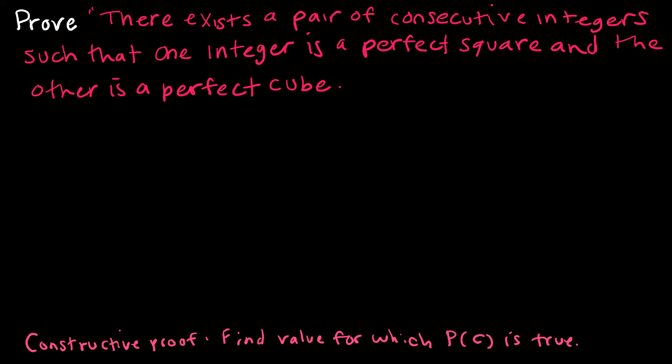When you prove existence, you have a choice. We're going to start by showing you a constructive proof, which basically says if I'm trying to show that something exists, just find an example for which it's true. Therefore, you've shown it exists. That's what we're going to do for this first example.